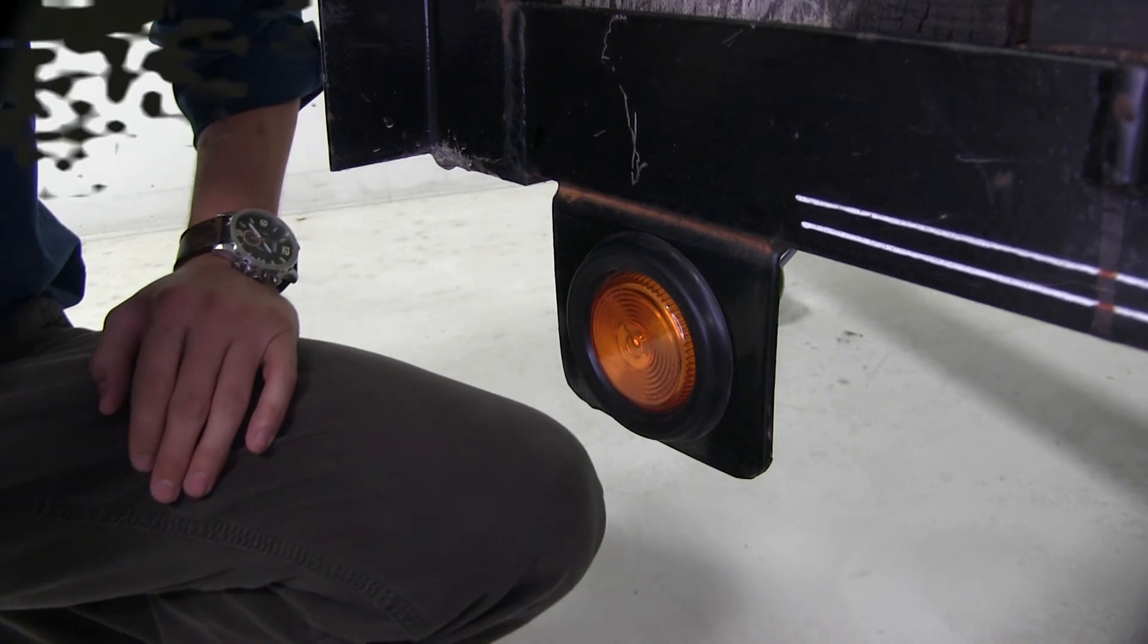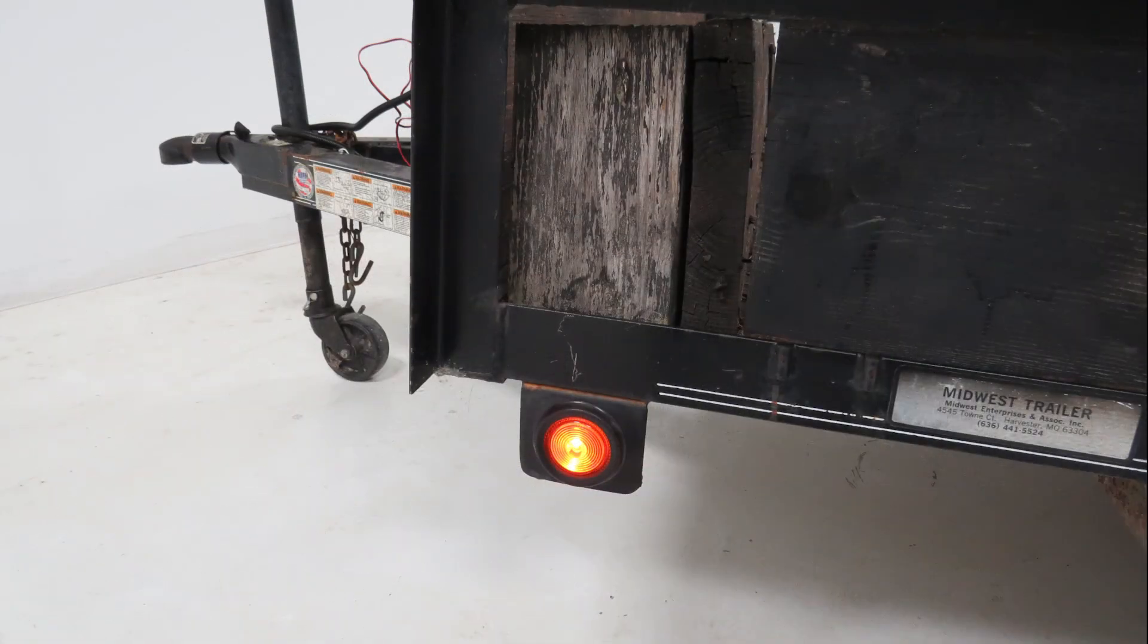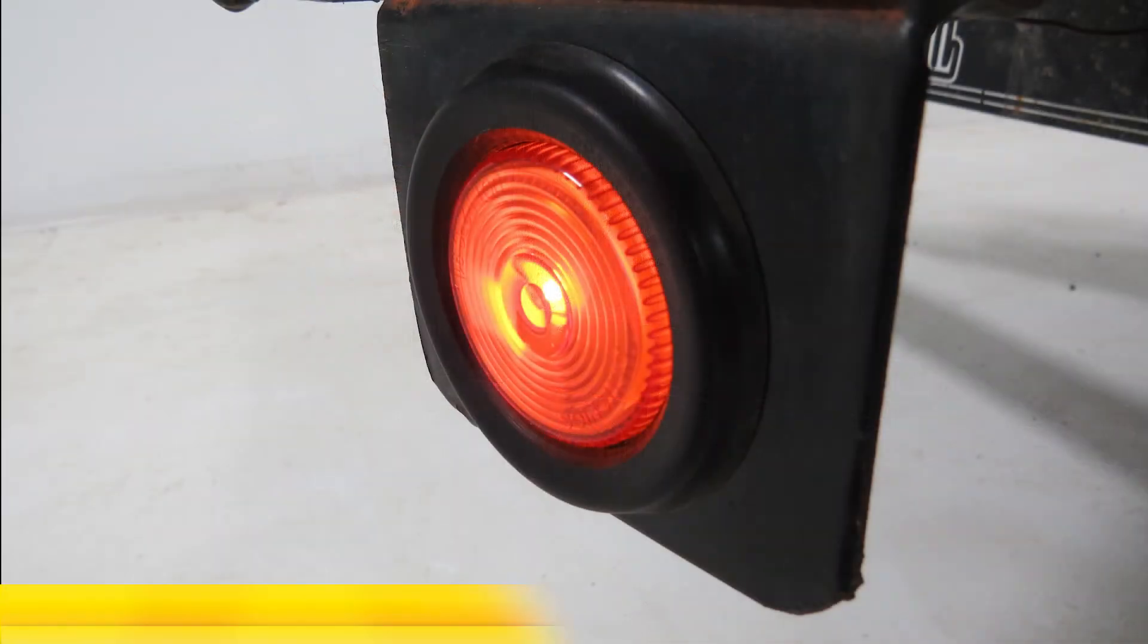We're all set. With our new Optronics light plugged in, it's working, and our trailer's going to be more visible at night. And that completes our look at the Optronics sealed 2-inch round amber trailer clearance and side marker light, part number MC53AB.